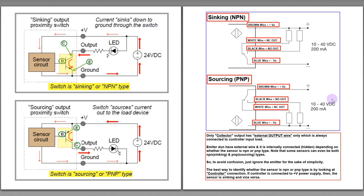Today I'm going to talk about the theoretical concept of sinking, or what we call NPN type switch, and sourcing, or what we call PNP type switch. As we know, instruments have two-wire and four-wire types, but there is another type called a three-wire instrument. We usually refer to three-wire instruments as switches.